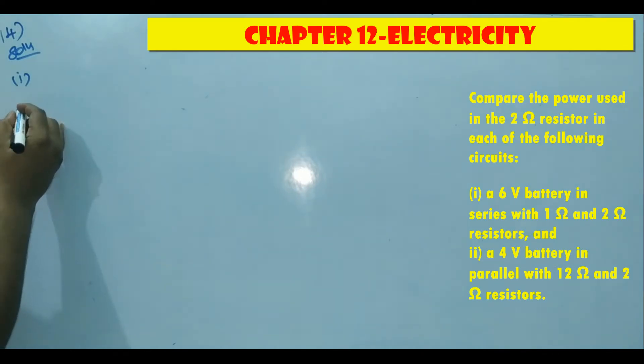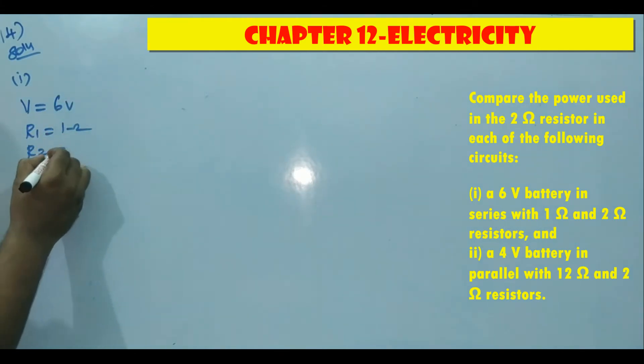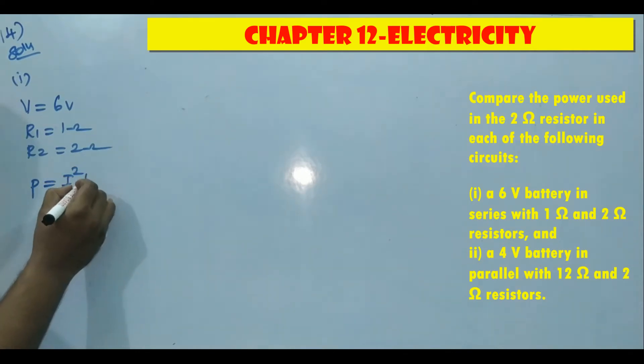A 6 volt battery in series with 1 ohm and 2 ohm. So voltage is equal to 6 volt, resistances are 1 ohm and 2 ohm. They're asking power used in the 2 ohm resistor. If resistances are connected in series, then power formula P is equal to I squared R. So R value is there. If we find the equivalent resistance in series, we'll get R value, then I squared. We don't have I, so first we have to find I squared, then substitute into the power formula.